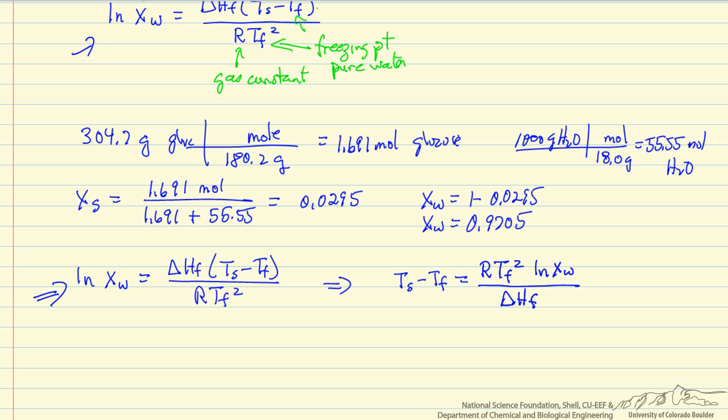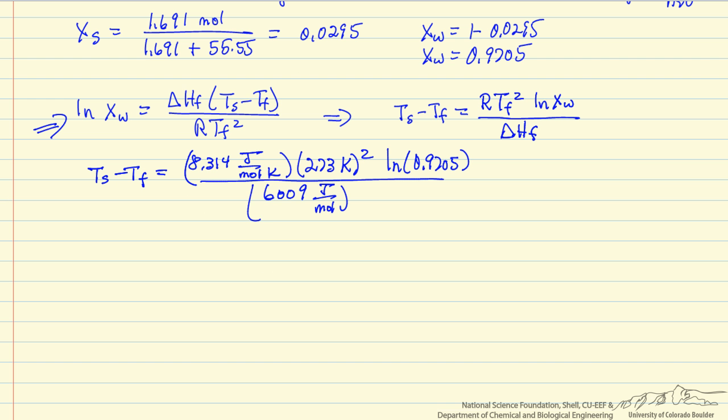Now we are going to substitute in the values into this equation. And so I put in the gas constant in units that are consistent with the heat of fusion value. The freezing point of pure water is 0 degrees centigrade, 273 Kelvin, has to be absolute temperature.